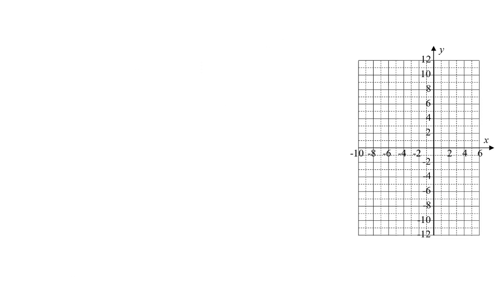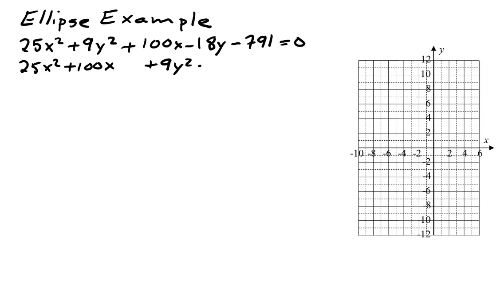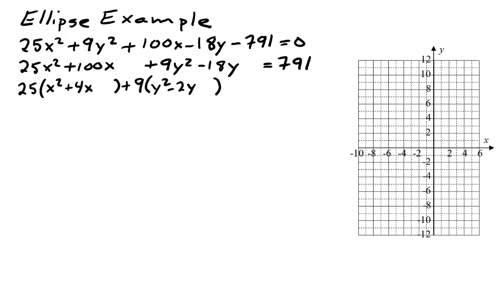For the final example, which has more algebra than the rest. We start with 25x squared plus 9y squared plus 100x minus 18y minus 791 equals 0. First, we bring the x terms together — 25x squared plus 100x — and the y terms together — 9y squared minus 18y — and put the constant 791 on the other side. Then we factor out the coefficient on the squared term: 25 out of the x terms gives 25 times the quantity x squared plus 4x, and 9 out of the y terms gives 9 times the quantity y squared minus 2y.